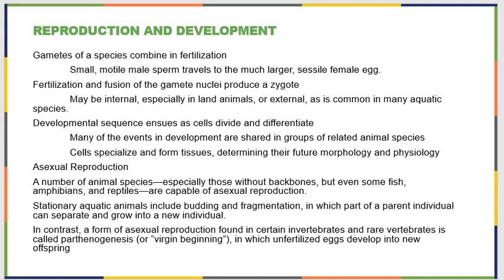Developmental sequences continue after the formation of the zygote — cells divide and become specialized. That's what differentiate means: they change from one another to make different specialized types of tissues. In asexual reproduction, especially in more simple body-planned animals — those without backbones — they can undergo budding or fragmentation, where a piece breaks off and grows into a new individual. Or it may be parthenogenesis, where an unfertilized egg can develop into new offspring, essentially because of an error in division.